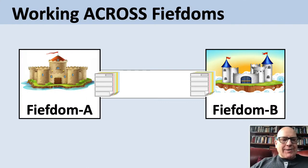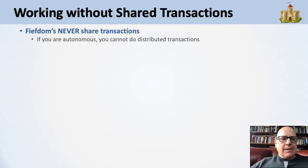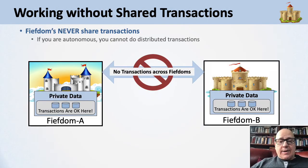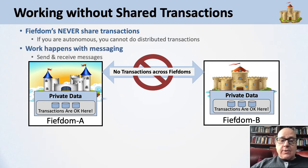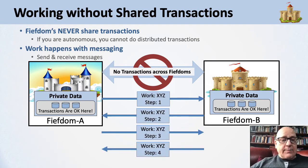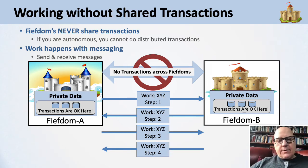Let's talk about working across fiefdoms. How do fiefdom A and fiefdom B get work done? You do work without shared transactions. Autonomy means independence — no shared transactions because you don't lock things up waiting for someone else. Autonomy means no distributed transactions; you can do local transactions but not distributed ones. So work happens with messaging — you send and receive messages related to each other to do one long-running piece of work. That's what I call a collaboration.